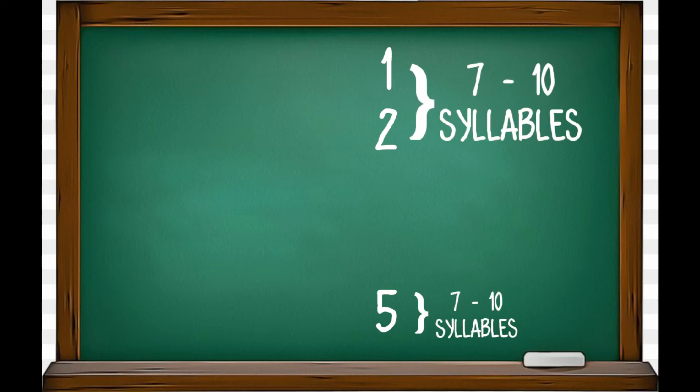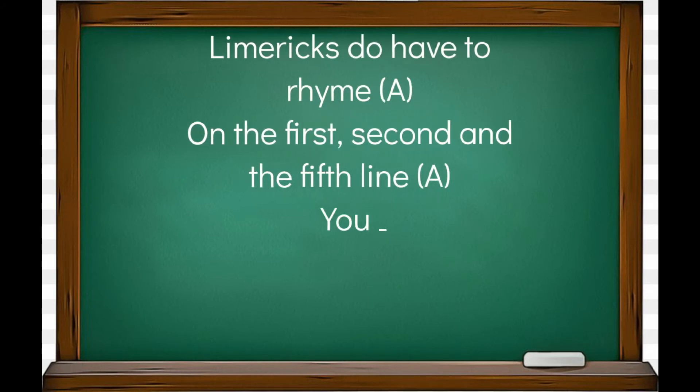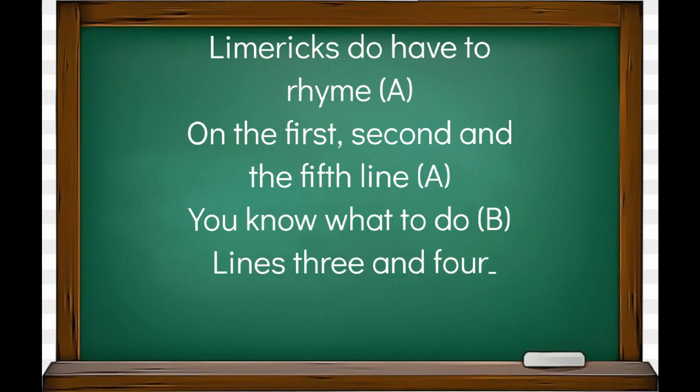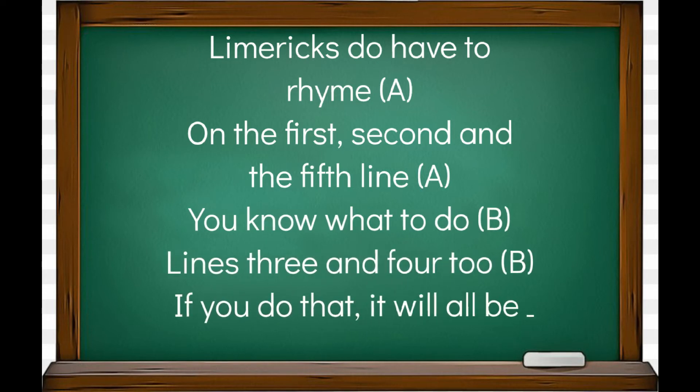The first, second and fifth lines of a limerick tend to have between seven and ten syllables, and lines three and four usually have between five and seven syllables. Here's the limerick that explains how to write one: Limericks do have to rhyme on the first, second and the fifth line. You know what to do, lines three and four too. If you do that it will all be fine.